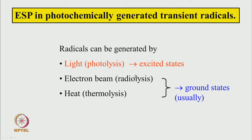Radicals can be generated either by light, which brings the molecule to an excited state, or by an electron beam (radiolysis), or by heating the sample (thermolysis). In the cases of radiolysis and thermolysis the reaction usually takes place in the ground state, whereas light involves the excited state.